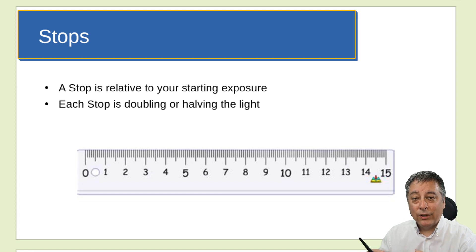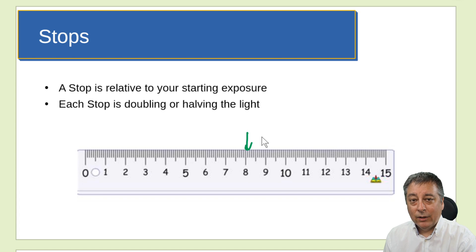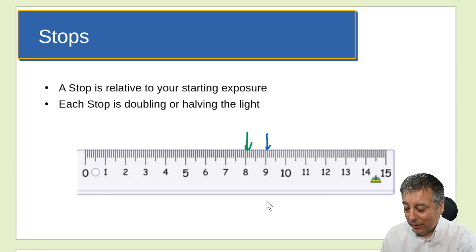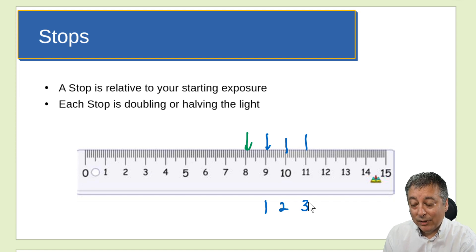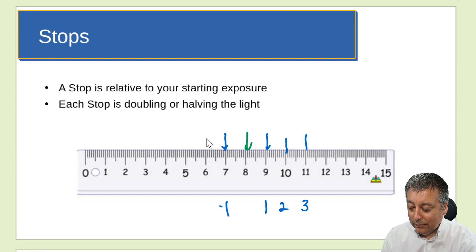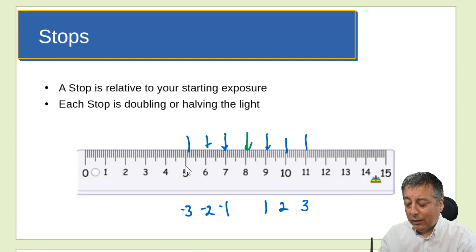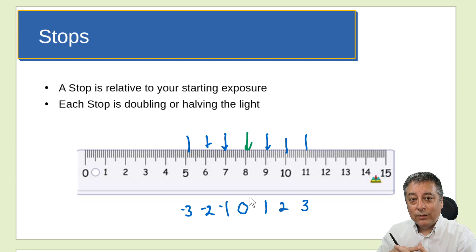A stop is always relative to your base exposure or your starting exposure. The easiest way to look at it is just look at a simple centimeter scale. If we start at 8 centimeters and pick a point at 9 centimeters, how far away is 9 from 8? It's just 1 centimeter. We wouldn't say it's 9 centimeters just because there's a 9 on the scale. Starting at 8, the 9 is only 1 centimeter away. And same thing goes for 10 — we're now 2 centimeters away, and 11 is 3 centimeters. Going in the opposite direction, we're negative 1 centimeter from the 8, negative 2, negative 3. So our base point on this ruler, our starting point, is at 8 centimeters — we put that at zero.